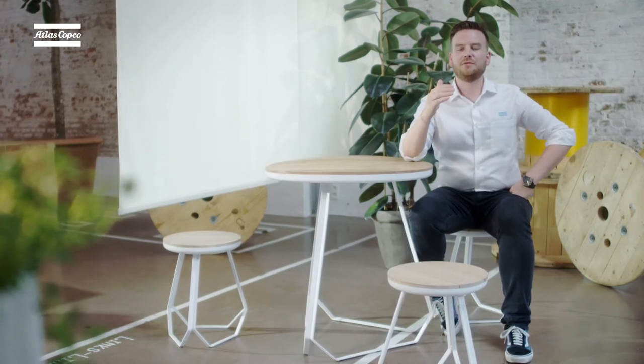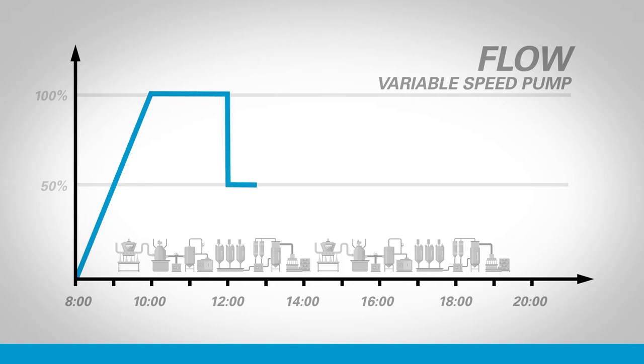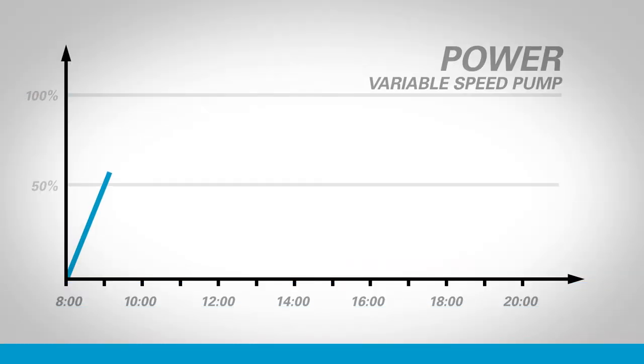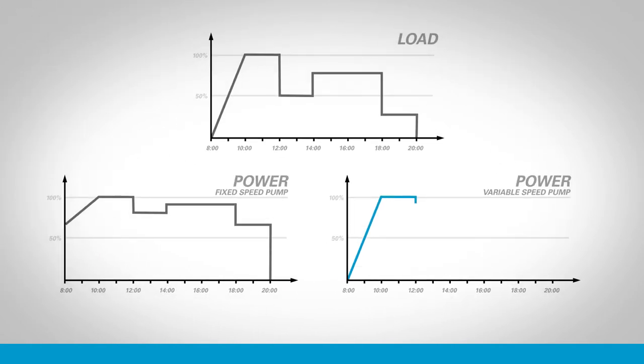Now let's look at a similar diagram for a variable speed unit. We want the load to be identical. This time, instead of plotting a fixed flow rate, we're going to set the vacuum level at the maximum authorized pressure — we take the pressure closest to atmosphere and fix the pump to pull that vacuum level all day long. Now we can fill in the flow rate: when we have maximum load the pump speeds up to provide full capacity, and when the load is reduced the motor slows down accordingly. With a variable speed pump, the power usage is directly related to the speed and throughput of the pump. When the pump handles maximum load the power absorbed is the same as the fixed speed unit. When the load reduces by half, the pressure set point is maintained by the pump slowing down and as a result the power will also halve. At the extreme, when there is no load the pump will stop and consume zero power.